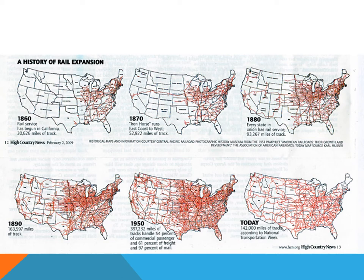This map shows how quickly things grew, and you can see from 1950 onwards how quickly it also fell apart — because of the car. When you look at these maps, specifically from 1860 to 1890, you'll notice that the eastern half of the United States is filling in very, very quickly. Even looking at 1951, there is a significant concentration of railroads on the eastern half versus the western half.